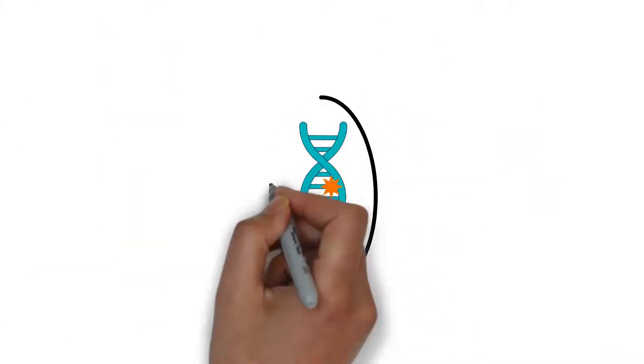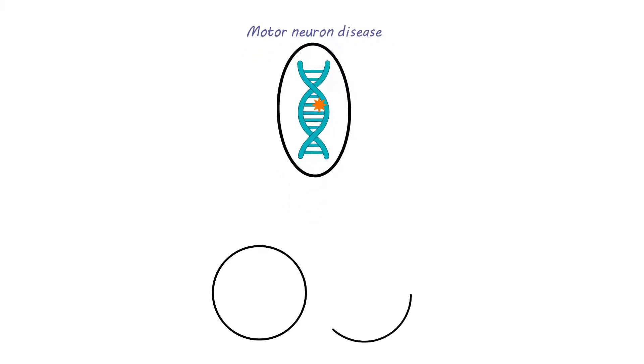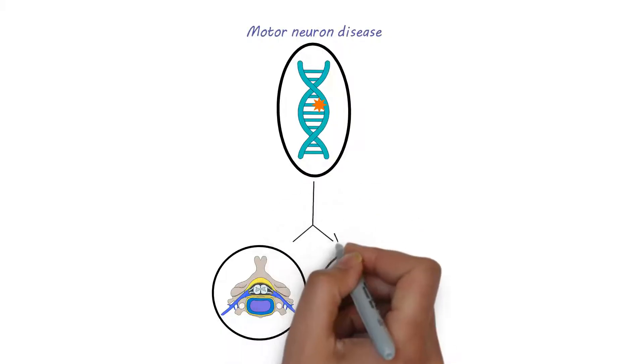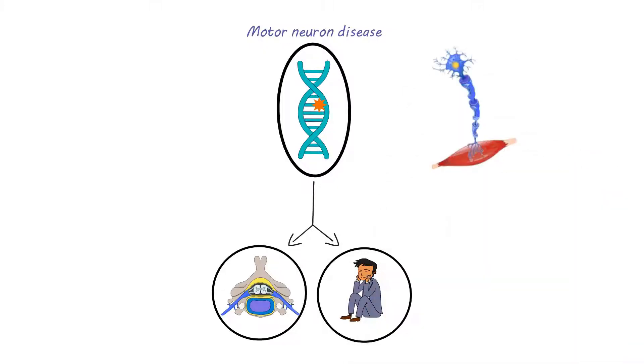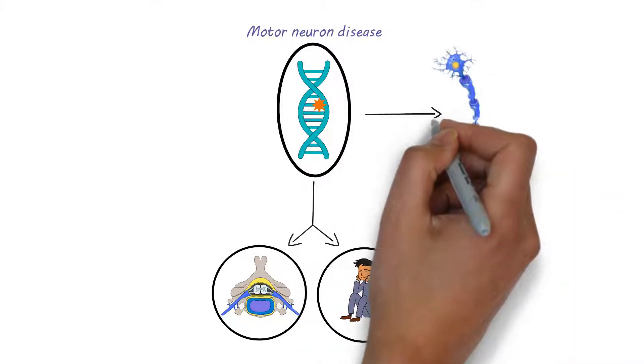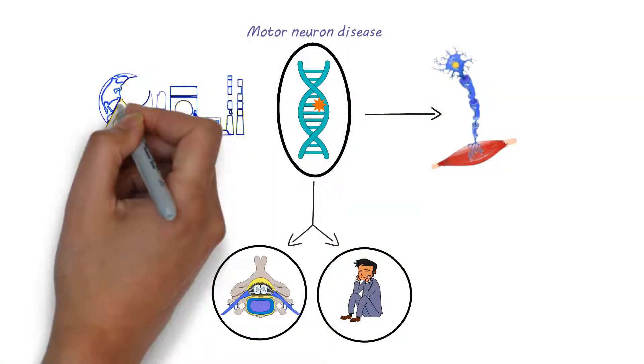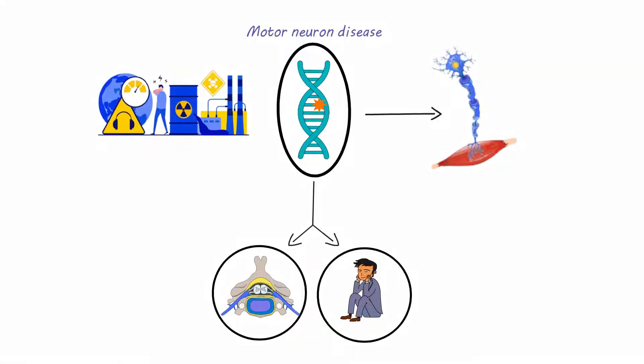Genetic mutations are also a known cause of motor neuron disease. Some forms of the disease, such as Spinal Muscular Atrophy, SMA, and Kennedy's disease, are caused by specific genetic mutations. In other cases, such as amyotrophic lateral sclerosis, genetic mutations may increase an individual's susceptibility to the disease, but other environmental or lifestyle factors may also play a role.